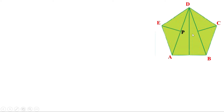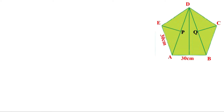Let us give a name for these points — let them be P and Q. Given that it is a regular pentagon, all the sides are equal and all the angles are equal. Given that the sides are equal to 30 centimeters, so this is 30 centimeters and all these sides are 30 centimeters. The angle of a regular pentagon is 108 degrees. Therefore, angle E is 108 degrees.